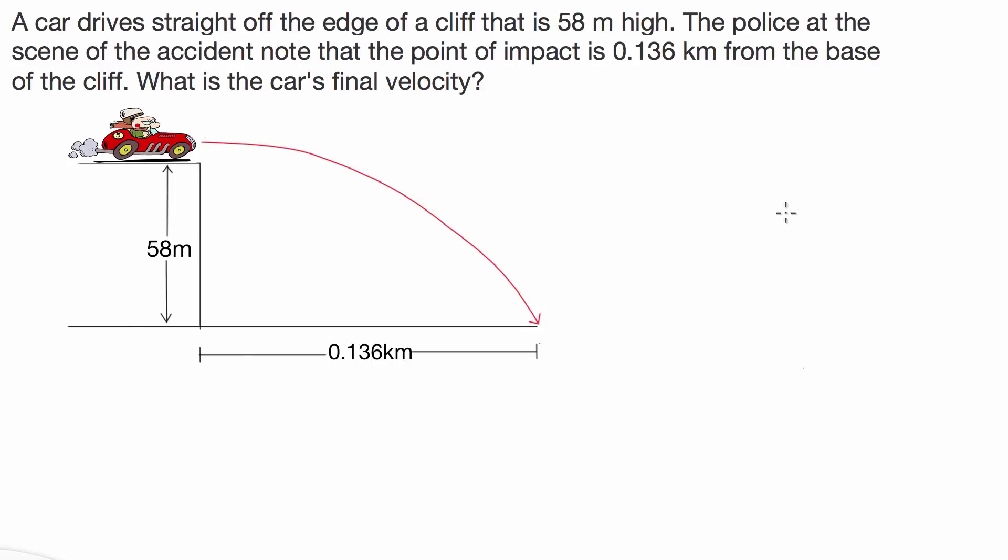Okay, we've been given a parabolic motion question where a driver drives off the edge of a cliff that is 58 meters high. The police at the scene of the accident note the point of impact is 0.136 kilometers from the base of the cliff. What is the car's final velocity?